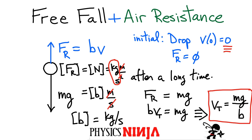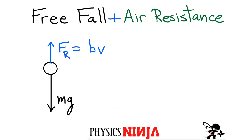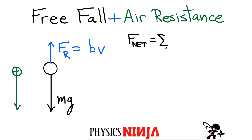Now let's go to the next page and write down Newton's second law. We have two forces acting on the system. I'm going to assume that the downward direction is my positive direction. Newton's second law says that the net force — the sum of all forces acting on the object — equals the mass multiplied by the acceleration.